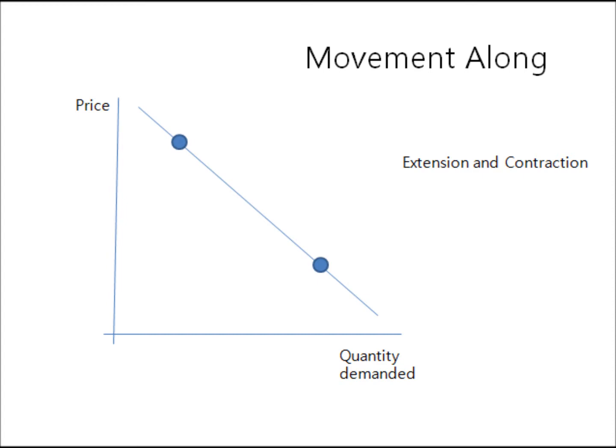In this video, point one represents the leftmost point and point two is the rightmost one. In economics, there's something called movement along. Movement along is basically when a point moves on the curve. It means that the line is going to stay the same and only the point will move on the curve.